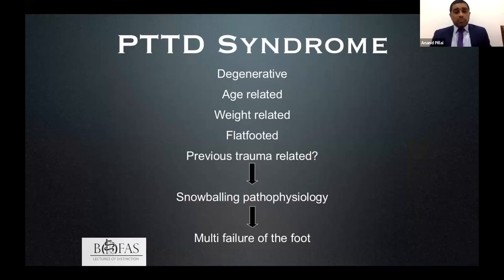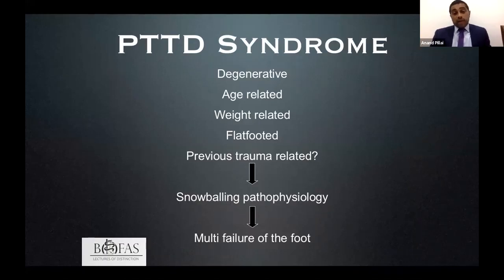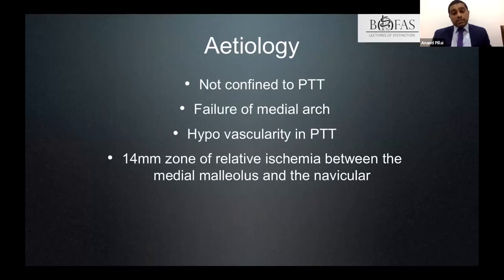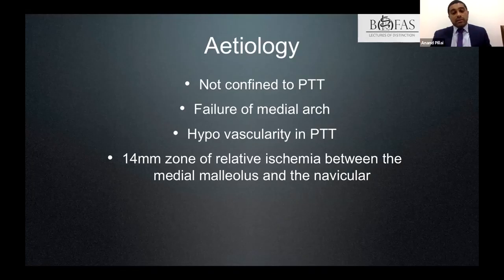What causes this? It could be degenerative — age, weight, and BMI all have a role. Activity and physiological flatfoot predispose people to develop adult acquired flatfoot later in life, and previous trauma can be a factor. Whatever the inciting cause, once the process starts, the pathophysiology snowballs and you get multiple points of failure, leading to a completely flattened foot.